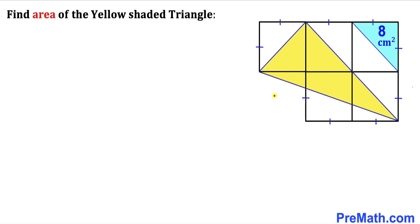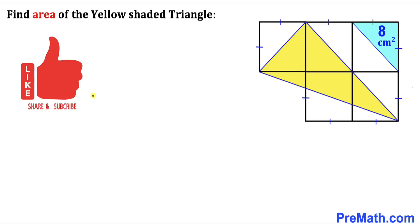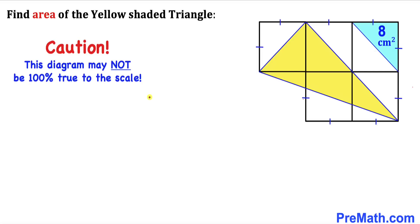Welcome to pre-math. In this video we have a bunch of tiny squares stacked together, such that the area of this blue right triangle is 8 centimeters square, and we are going to calculate the area of this yellow shaded triangle. Note that this figure may not be 100% true to scale.